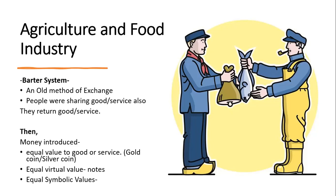When money was introduced for the first time, gold and silver were used because their value was equal to the good or service sold — it was an equal actual value. Then coins and notes came, but the value was virtual and equal. Up to today, we are using money whose equal value is symbolic, not the actual value.